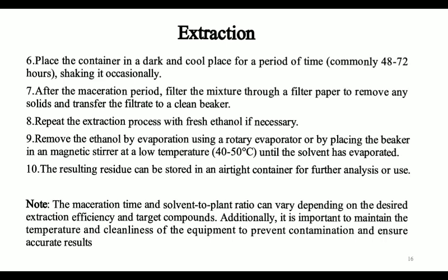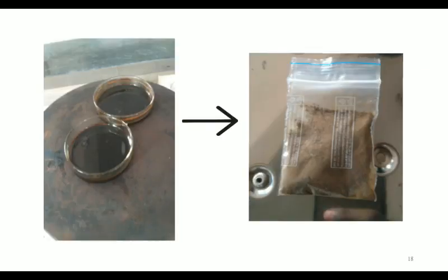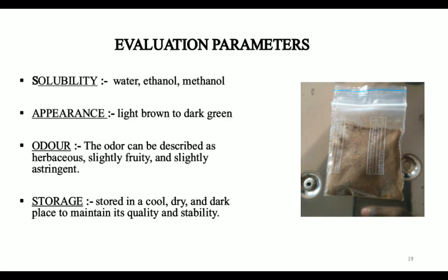It is important to maintain temperature and cleanliness of equipment to prevent contamination and ensure accurate results. You can see in the picture that ethanol and powder of guava leaves are mixed, and the extract is shown on the right side. This is a magnetic stirrer on which the extracts are processed. The dried pure drug has the following properties: it is soluble in water, ethanol, and methanol. It appears as light brown to dark green. The odor can be described as herbaceous, slightly fruity, and slightly astringent. Store in a cool, dry, dark place to maintain quality and stability.